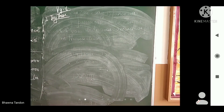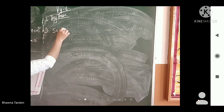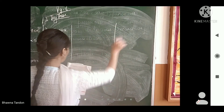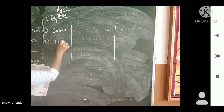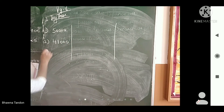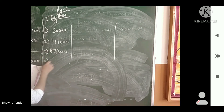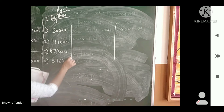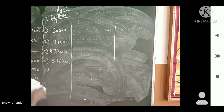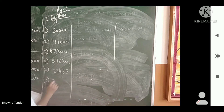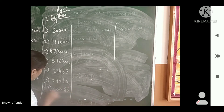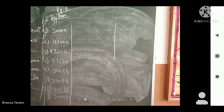Your first number is 50,000 — write its number name and expansion. Second number is 41,000. Start doing it yourself. Third is 47,305 or 47,630. Then we have 29,485, 29,085, 20,085, and 20,005. Write the number name and expansion for all of these.